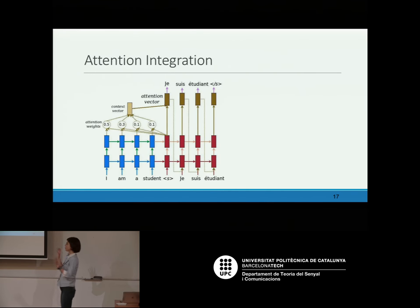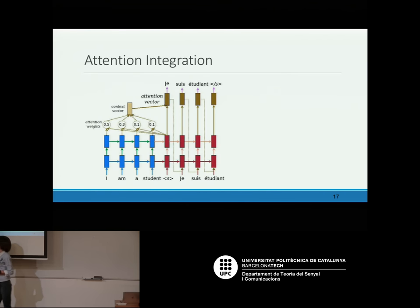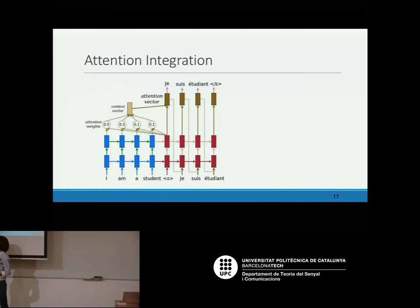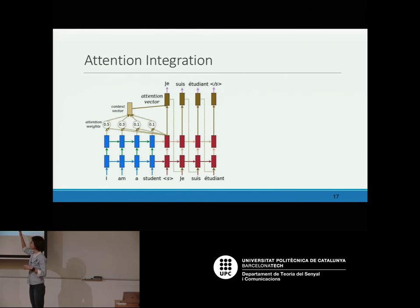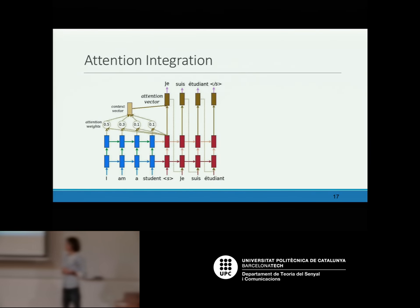Here is the integrated picture of the whole attention mechanism. We have the encoder with the words, the representation of words, and the hidden states — which contain the word representation plus all the history. This is the key vector; the hidden decoder state is the query vector. You combine them to obtain the weights, then combine the keys and weights to obtain the context vector, which is what you use to decode. Instead of using only one representation, you have as many context vectors as decoder steps.